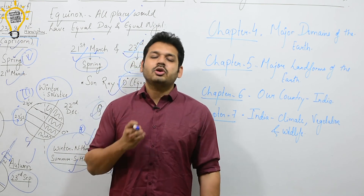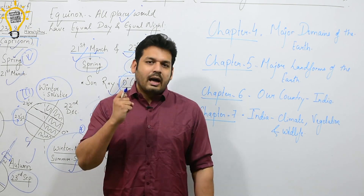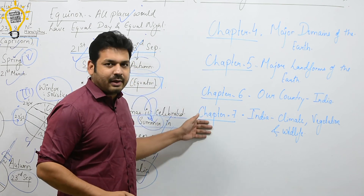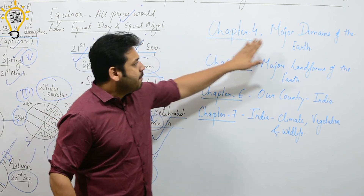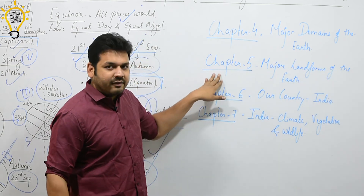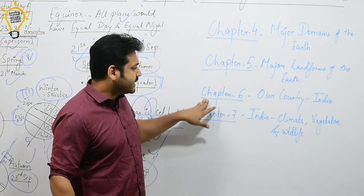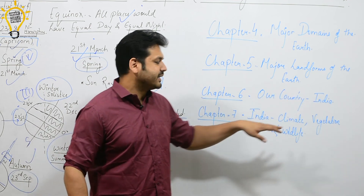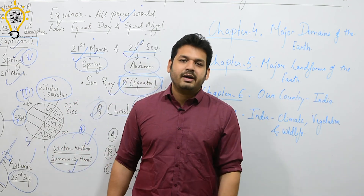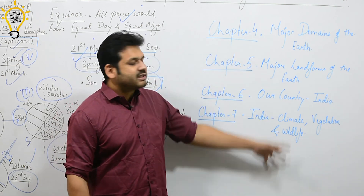Our chapter 3 is now complete. The next chapter is Chapter 4: Major Domains of the Earth. Then Chapter 5: Major Landforms of the Earth. Chapter 6: Our Country India — Basic Facts. Chapter 7: India — Climate, Vegetation and Wildlife. We will discuss these in the next lectures.